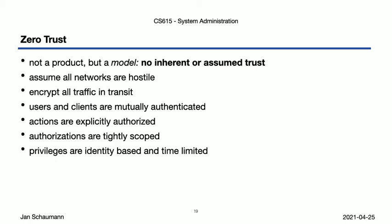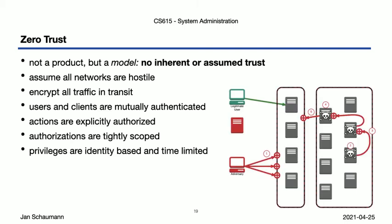And you can get there incrementally. All of these rules then enable you to specifically disrupt each of the stages of the attack lifecycle. And somewhat paradoxically, you can actually make certain counter-intuitive access decisions and, for example, allow connections to internal services from the Internet, because you treat your internal network as equally untrusted as the Internet. You can deploy services without having to think about which security zone or what network they have to go into, and you're still assured that lateral movement is restricted because everything requires explicit authentication and authorization.